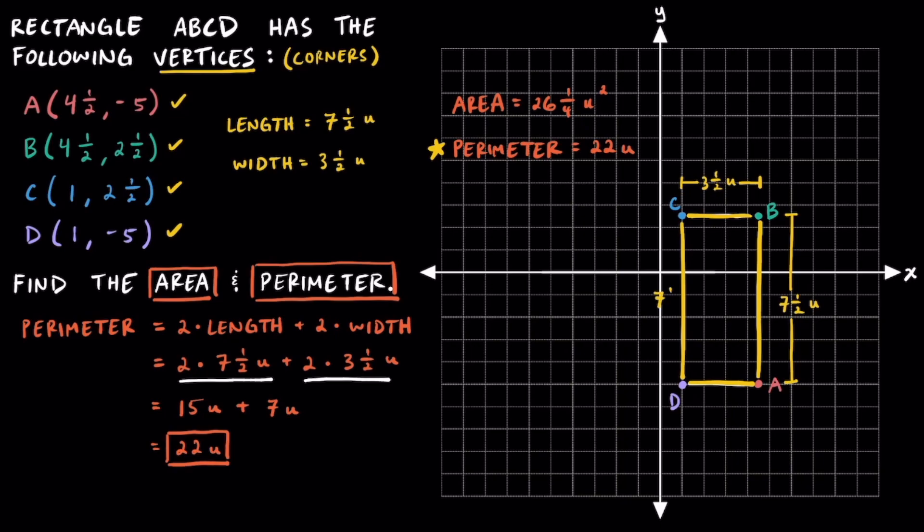And so there you have it. Even though we were only given four vertices or four corners, we were able to figure out the area and perimeter using those coordinates. I really hope you found this video helpful, and as always, keep up the great work!